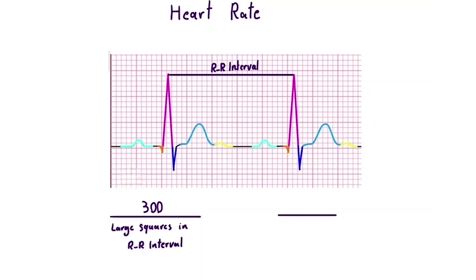Alternatively, you can count the small squares between two R waves and divide 1500 by that number. If the resulting number falls between 60 and 100 beats per minute, then the rhythm is within the normal sinus range.